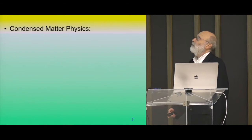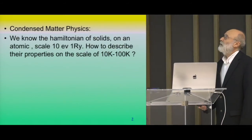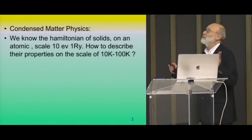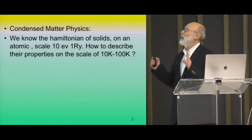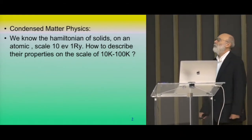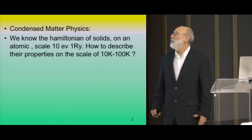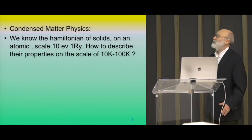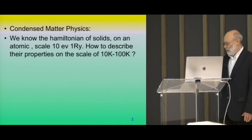I'll try to explain where we are in trying to build a predictive theory of strongly correlated electron matter. Let me tell you a little bit about condensed matter physics for a general audience. Here we really know the Hamiltonian on an atomic scale. Starting with an energy scale of 10 eV or 1 Rydberg, we know exactly where the atoms are, which type of atoms and constituents we have in our material. The challenge is to go to much lower energy scales and describe the low energy properties, say on a scale of 10 or 100 Kelvin.